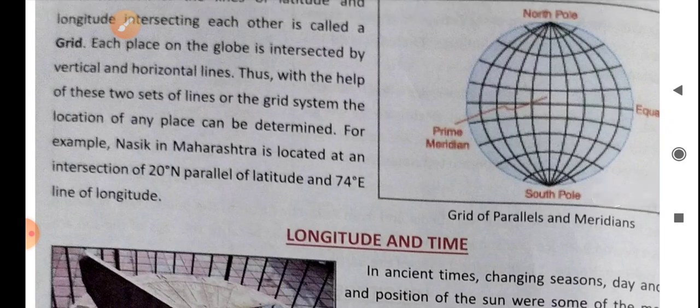For example, Nasik in Maharashtra is located at intersection of 20 degree north parallel of latitude and 74 degree east line of longitude.